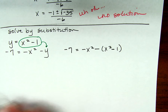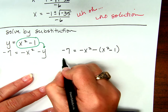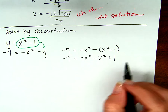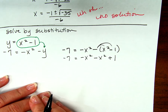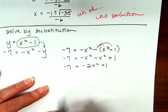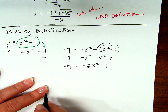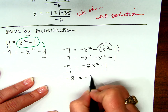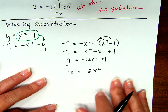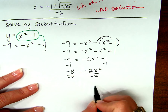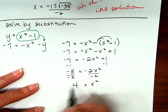Now we just have to simplify. Negative 7 equals negative x squared minus x squared plus 1 — because we distributed, right? Combine your like terms: negative 7 equals negative 2x squared plus 1. Subtract 1 from both sides: negative 8 equals negative 2x squared. This is really nice because I don't even have an x term. So if I divide by negative 2 on both sides, I get x squared equals 4, and I can use square roots to solve.